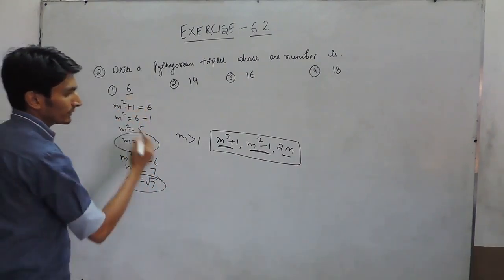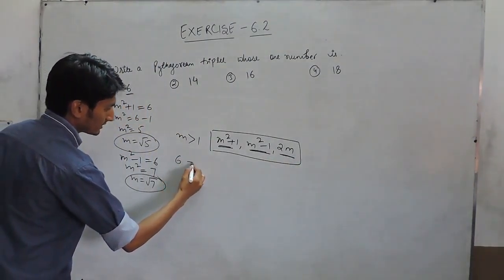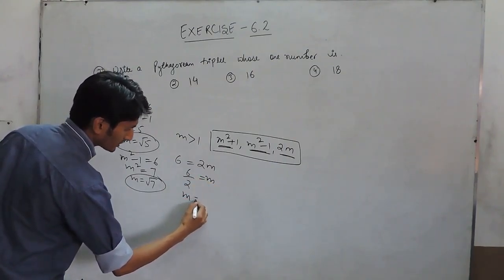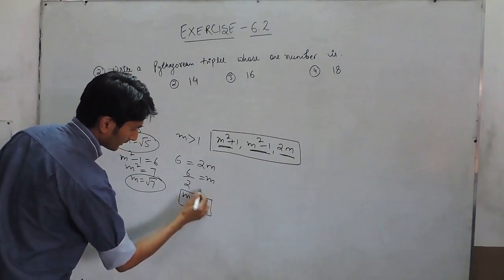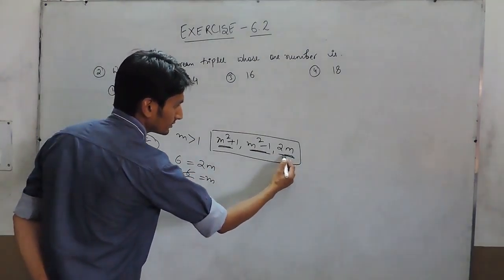So this must be the last number. So 6 = 2m, so m must be 6 ÷ 2, so m must be 3. So the value of m is 3.